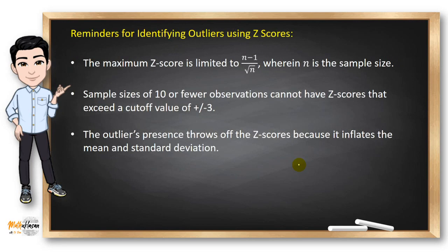Note that z-scores can be misleading with small datasets because the maximum z-score is just limited to n-1 over square root of n. So, in our case, since we have 15 sample size, minus 1 divided by square root of 15, the answer is 3.61. Well, in this case, the maximum possible value is 3.61. So, it's really possible to have a value greater than 3.0 or 3. So, it's just okay in our case.